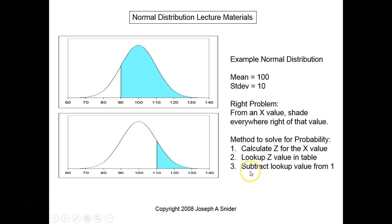Subtract the lookup value from one. Now why do you do that? If one is 100 percent and it includes everything being shaded, and then you take away what's shaded to the left, then you get what's shaded to the right.